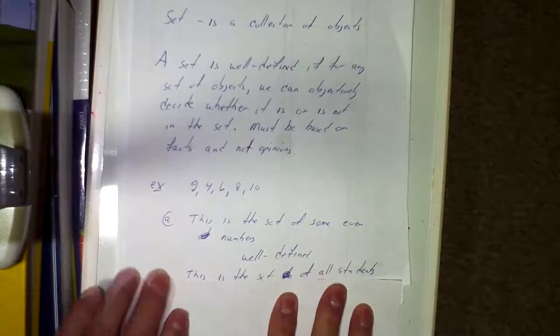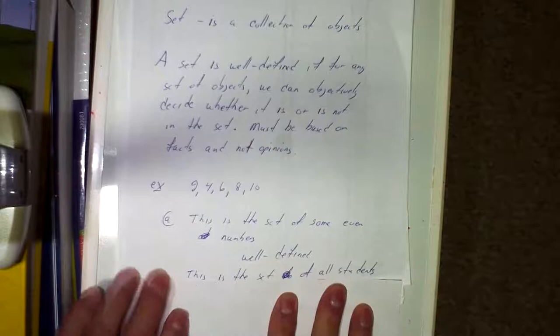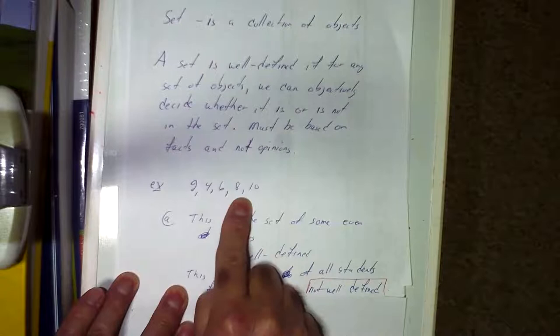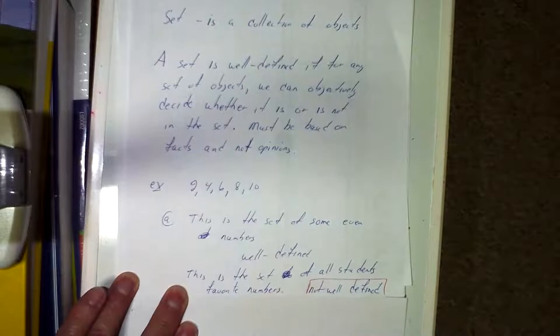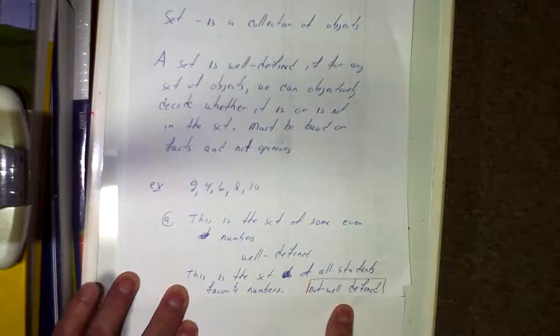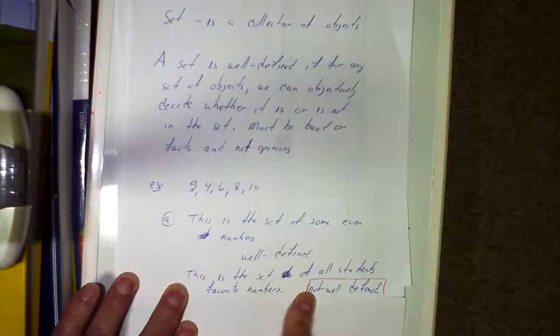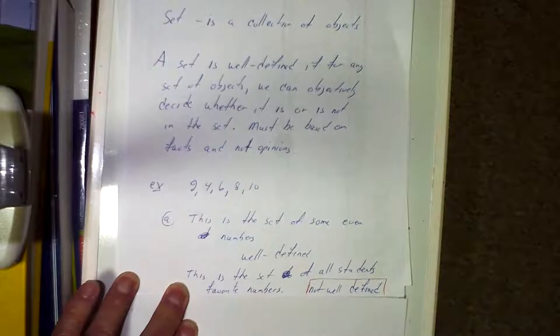However, if we say this is the set of all students' favorite numbers, that's not well-defined, because we don't know what your favorite number is — maybe it's not on the list. It may not be true that those numbers are everyone's favorites. So well-defined means we have proof it is true; not well-defined means it's not totally true.